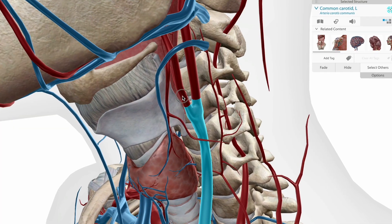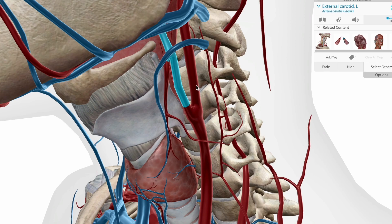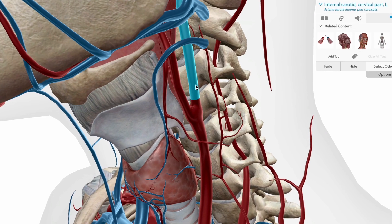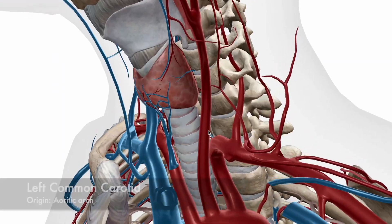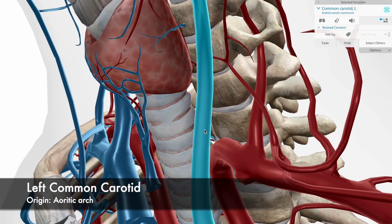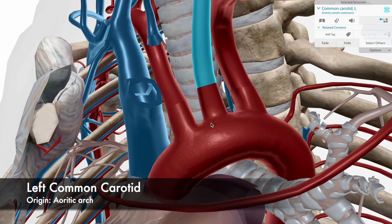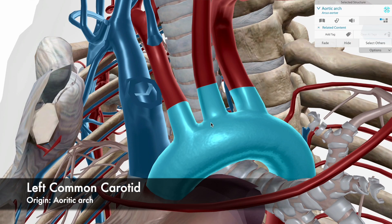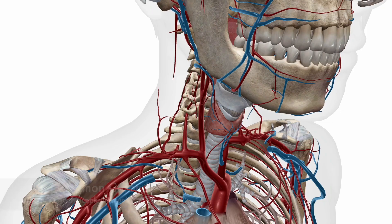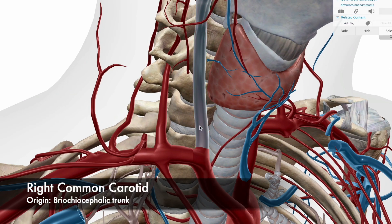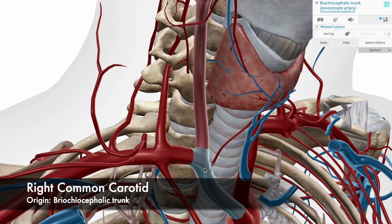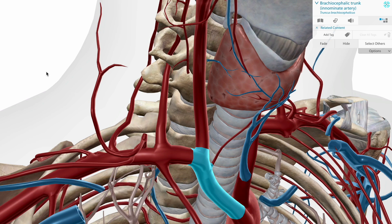The first structures we need to familiarize ourselves with in any choke are the carotid arteries. The common carotid arteries have different origins. The left common carotid artery is a branch from the aortic arch, which gets its blood directly from the heart. The right common carotid artery's origin is the brachiocephalic trunk off the aortic arch.